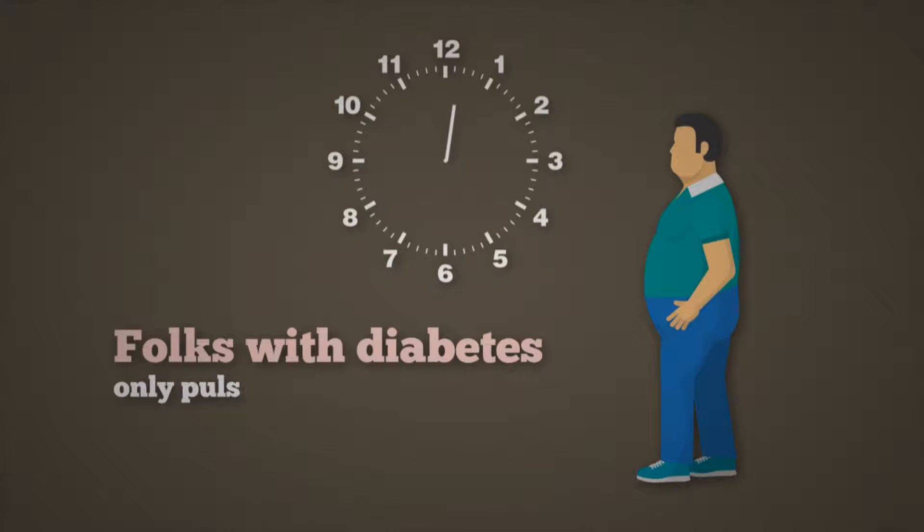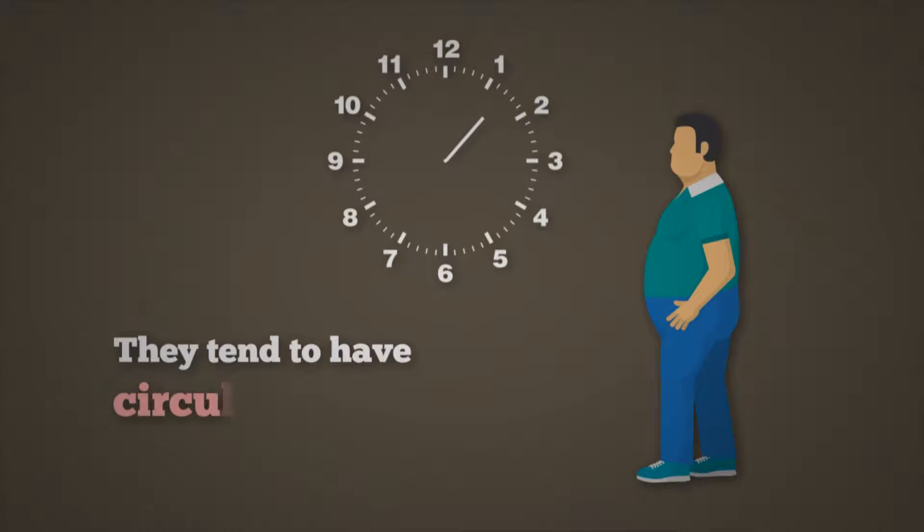Folks with diabetes only pulse about once every ten minutes, and this is why they tend to have circulatory problems.